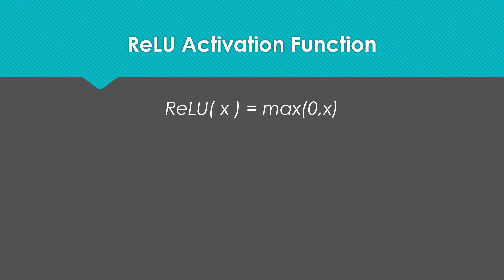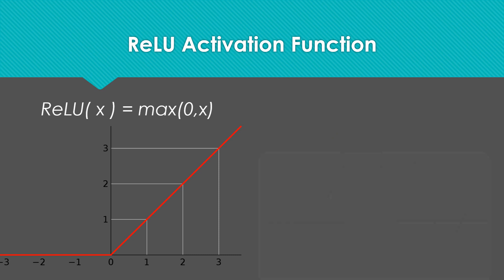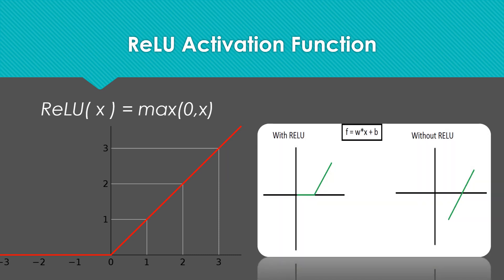But first, let's understand the ReLU activation function because we'll be using this in one of the neural networks. ReLU of x basically just calculates the maximum of 0 and x. So if it is a negative value, it is clipped to 0, otherwise it returns the same value. The graph looks something like this. All the values are clipped to 0 and then we get a linear graph. A function activated with ReLU looks something like this on the right. And without ReLU, the function is basically a linear function.